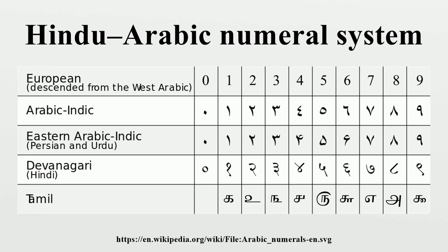Development: The place-value system is used in the Bakshali manuscript. Although the date of composition is uncertain, the language used indicates it could not have been composed any later than 400 CE. The development of the positional decimal system takes its origins in Hindu mathematics during the Gupta period. Around 500, the astronomer Aryabhata uses the word 'kha' to mark zero in tabular arrangements of digits. The 7th-century Brahmasphutasiddhanta contained a comparatively advanced understanding of the mathematical role of zero. A Sanskrit translation of a lost 5th-century Prakrit Jaina cosmological text may preserve an early instance of positional use of zero.